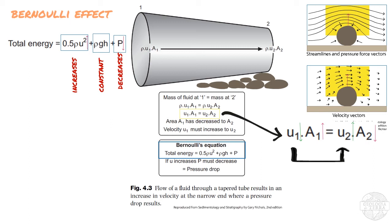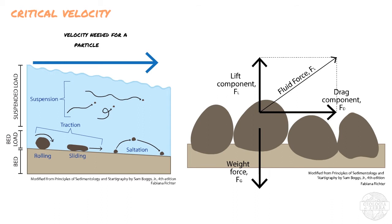But for this to happen, the flow has to achieve a critical velocity. And the critical velocity is the fluid velocity needed for a particle of a certain size to be entrained in the flow.